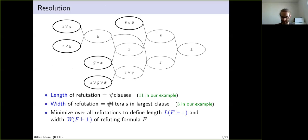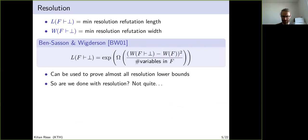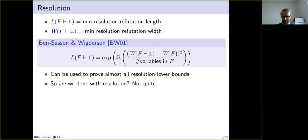There is a famous relation between width and length due to Ben-Sasson and Wigderson: if you can prove a linear-in-the-number-of-variables lower bound on the width, then you also get an exponential length lower bound. More precisely, one needs that the width lower bound minus the initial width of the formula, squared, divided by the number of variables in the formula, is a linear number of variables. Almost all resolution lower bounds go through this relation.